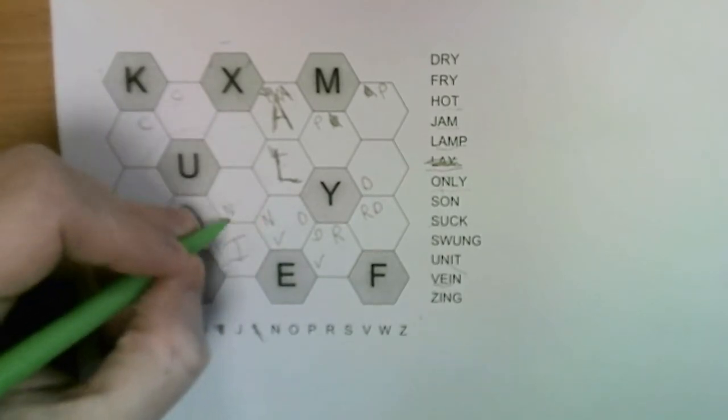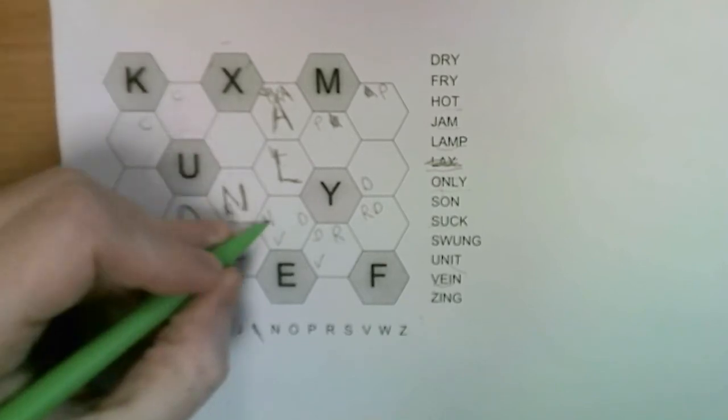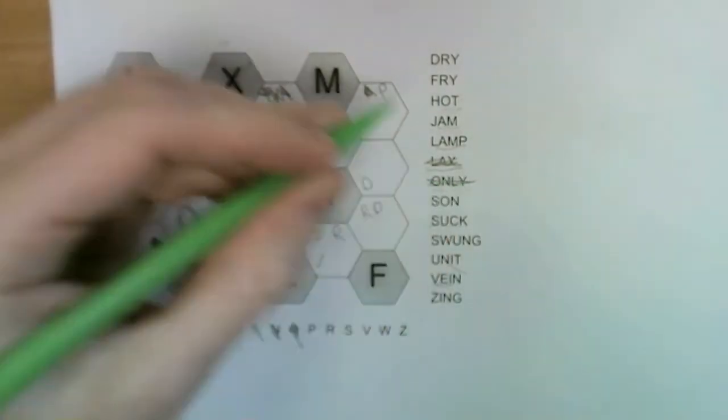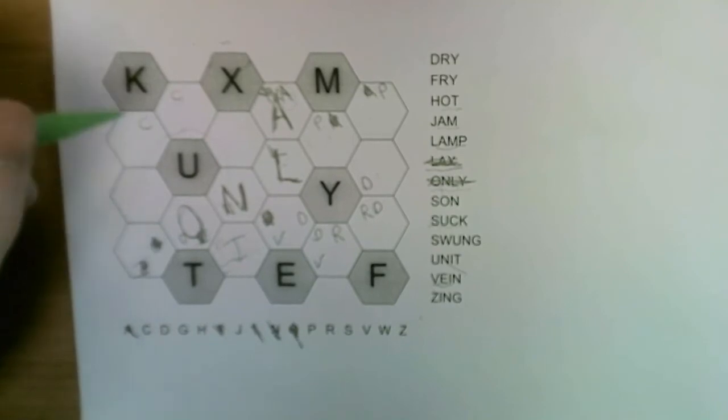Then the N clearly has to go here. That's the O placed and that's the N placed, and that gives us our only instance in the grid.